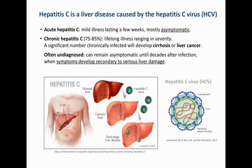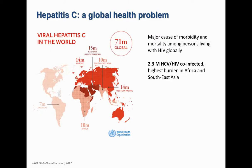Hepatitis C virus is a small envelope virus with an RNA genome, discovered in 1989, that infects the liver causing hepatitis C. While acute hepatitis C is generally mild and can be spontaneously cleared by the immune response, most infected people will develop chronic hepatitis C. Globally, hepatitis C is a major health problem with over 70 million people living with chronic infection.